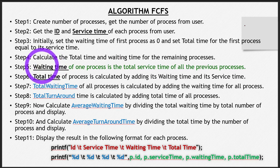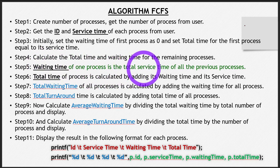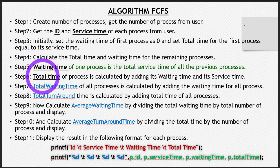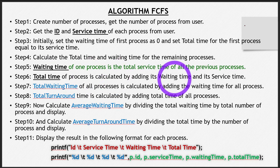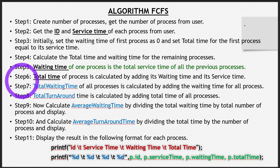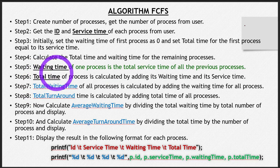Step five defines what waiting time is: the waiting time of one process is the total service time of all previous processes. The total time of any process is calculated by the formula: waiting time plus service time. This is how you will do it.